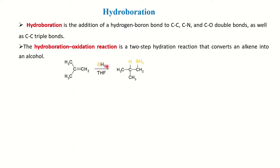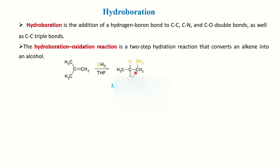When you have an alkene in the presence of BH3, the hydrogen of BH3 and BH2 will add to the double bond. If you write BH3 as H–BH2, then the addition of hydrogen and BH2 to the double bond takes place. The question is: where does hydrogen add and where does BH2 add? It follows Markovnikov's rule — hydrogen adds to the more substituted carbon (the one with two methyl groups), while BH2, being bulky, adds to the terminal carbon.